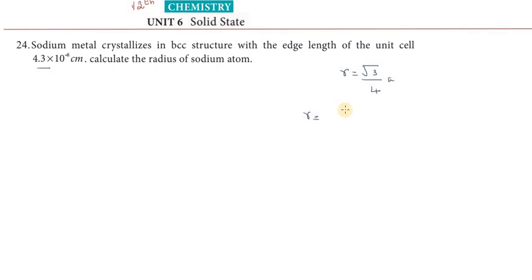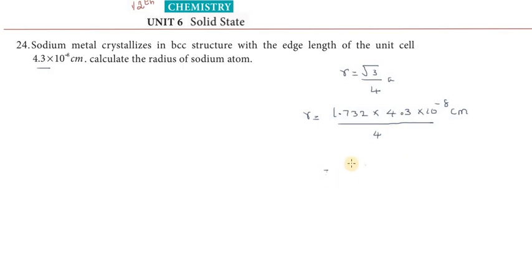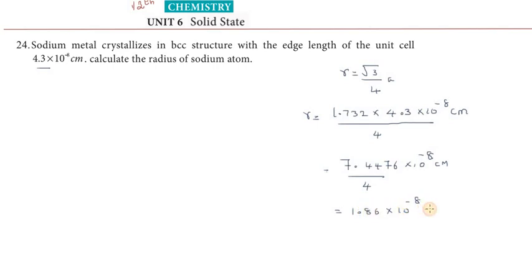So, R = (1.732 × 4.3×10⁻⁸ cm) / 4. Calculating: 1.732 × 4.3 = 7.4476, so R = 7.4476×10⁻⁸ / 4 = 1.86×10⁻⁸ centimeters. That is the answer.